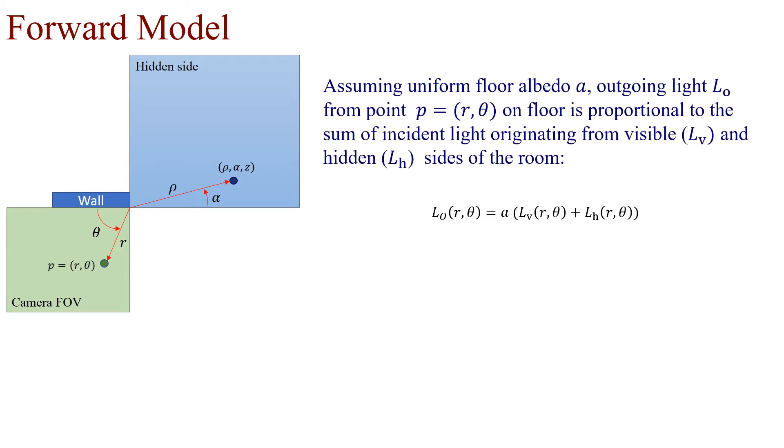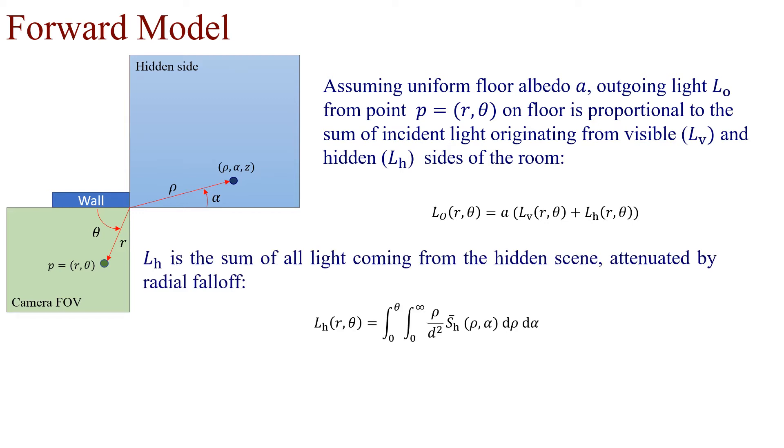Under this parameterization of the hidden scene and assuming uniform floor albedo, the light outgoing at point P on the floor is the sum of incident light from the visible and hidden sides multiplied by the floor albedo. LH is the sum of all light originating from the hidden scene attenuated by radial falloff.